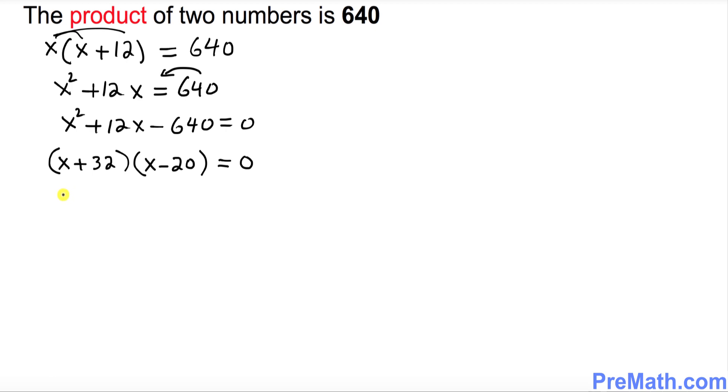Let's go ahead and split it up. So x plus 32 equals 0, and on this side, x minus 20 equals 0.